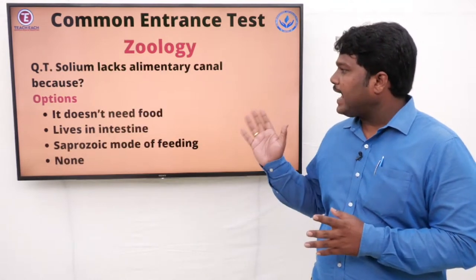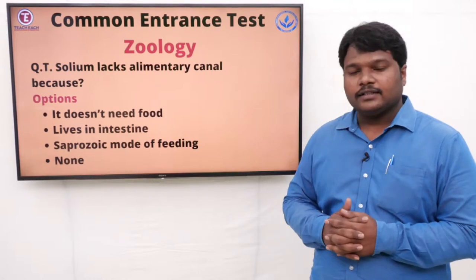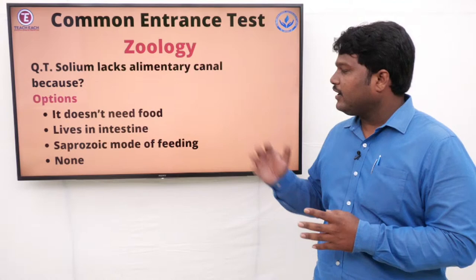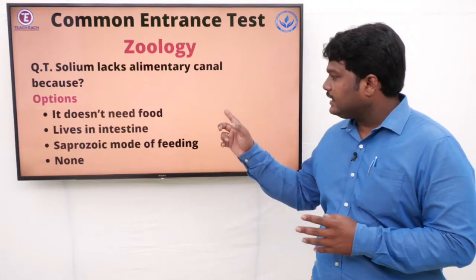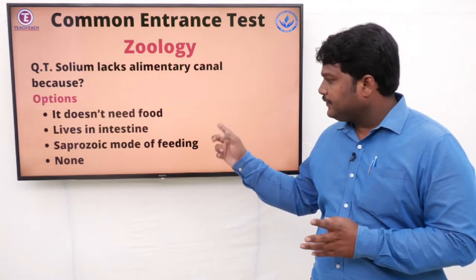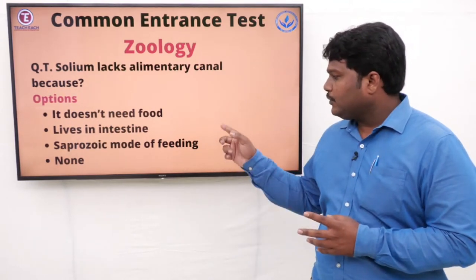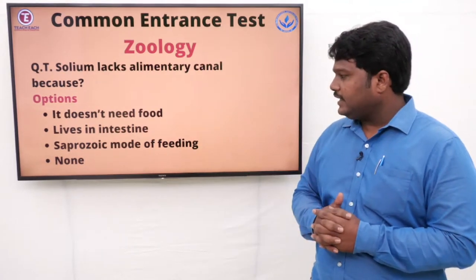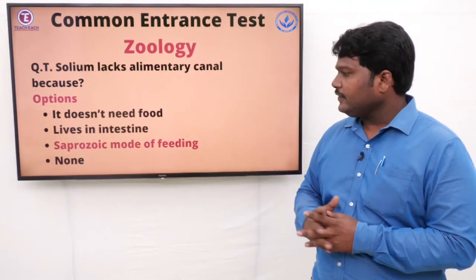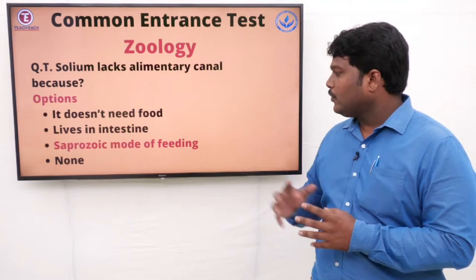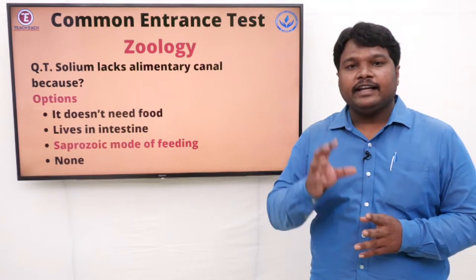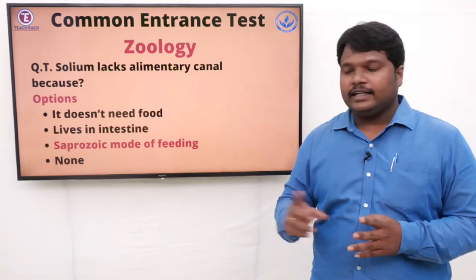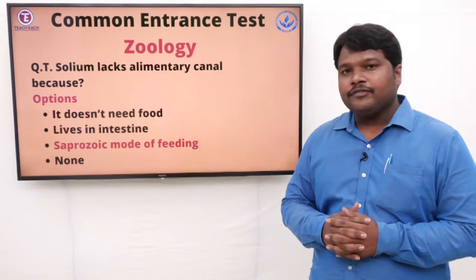Question 26: Taenia solium lacks an alimentary canal because. Options: A) It does not need food, B) It lives in intestine, C) Saprozoic mode of feeding, D) None. The right answer is saprozoic mode of feeding. It has a different type of food ingestion — the saprozoic mode of feeding.